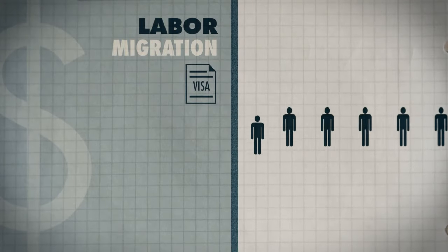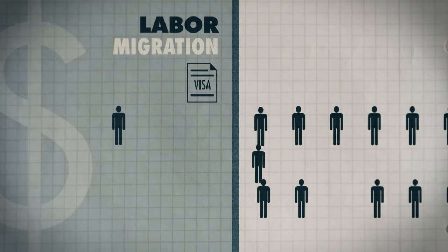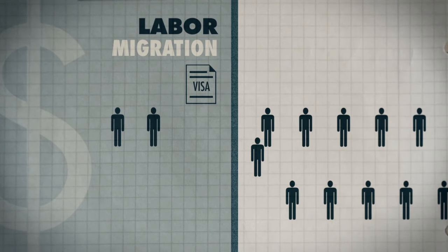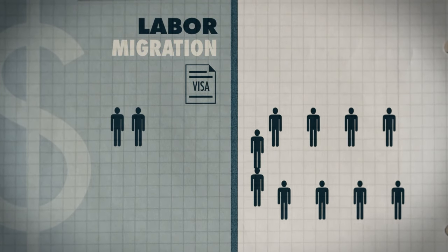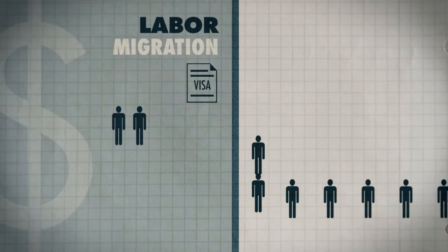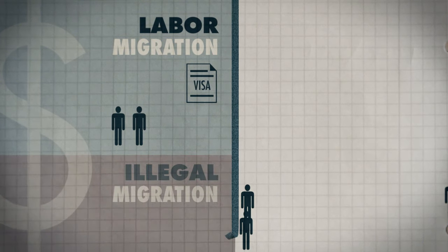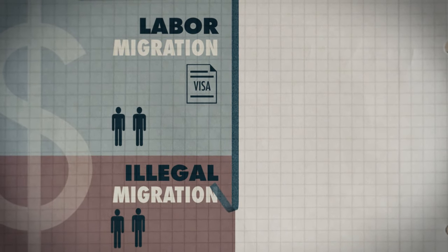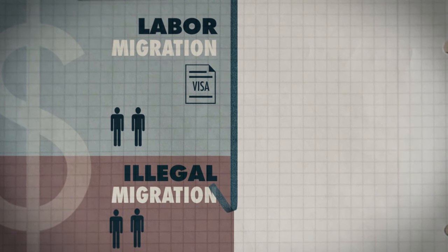Labor migration is based on the hope for a better economic future. But it can be difficult for people from poor countries to get a work or residence visa in a rich country. Migrants who enter the destination country in an informal way, or who do not leave the country after the expiration of a tourist visa, are referred to as illegal migrants.